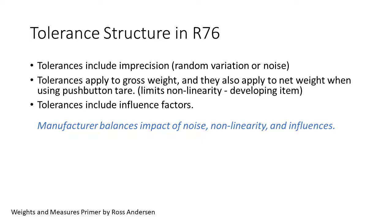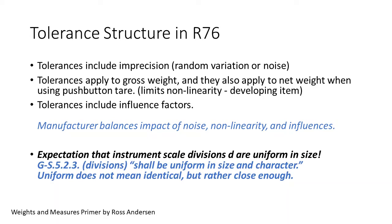Tolerances in R76 reflect that the performance may only be quasi-linear over the weighing range. The R76 tolerances address many sources of error. Tolerances include imprecision or noise. If the instrument gives varying results when tests are repeated, then all of the values must fall within the tolerance. We apply tolerances to both gross and net weight. This limits any curvature or erratic changes in the instrument performance. This is another developing item not included in the charge of the task group. From any net zero indication, the tolerance structure is reset to a new zero reference. Tolerances include influence factors, where the instrument performance changes based on the environment. With these three competing sources of variability, we see that the manufacturer has to balance the impact of all three in combination. An increase in one requires a decrease in the other two. Finally, there's a fourth item. We expect the divisions of the instrument scale to be uniform in size and character. That's resolution.